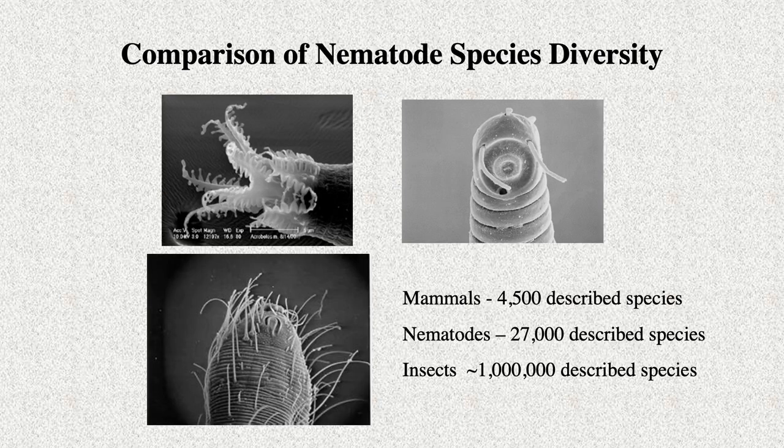How does described nematode diversity compare to other groups of organisms? There are many more described species of nematodes than there are of mammals, but many fewer than insects. How many undescribed species are there? Scientists have tried to make educated guesses, but the truth is there are some things we just don't have good answers for yet, and this is one of them.